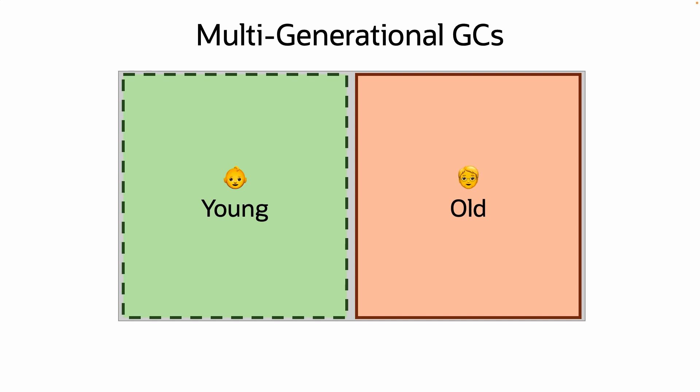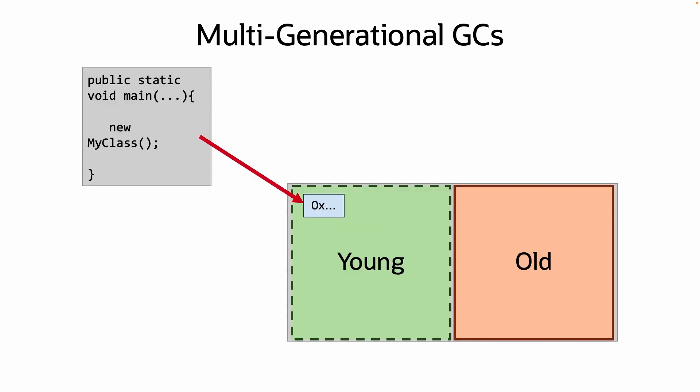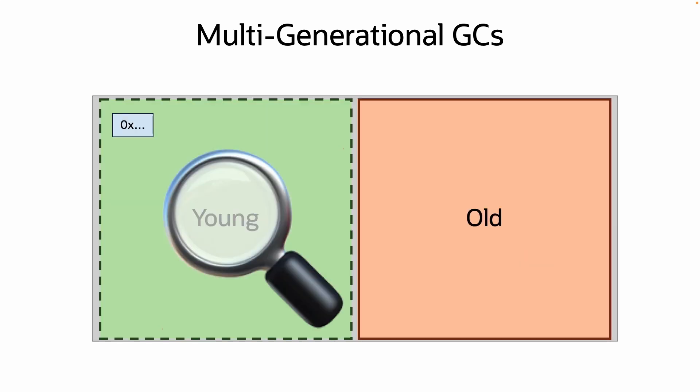Multi-Generational GCs split the heap into two logical regions: young and old. They do this to take advantage of the weak generational hypothesis, which posits that most objects die young. As new objects are created, they are initially placed into the young region, and objects are only promoted to the less scanned old region if they survive enough GC cycles.